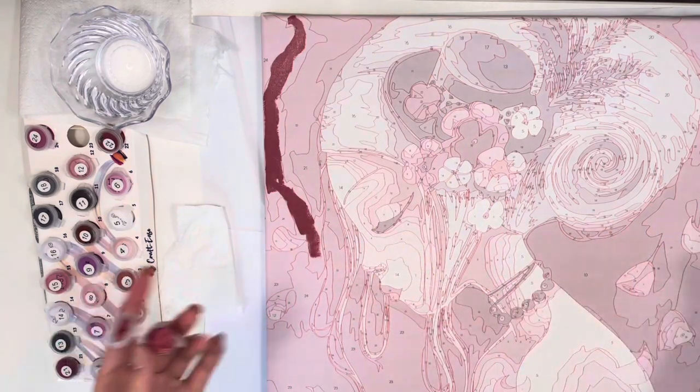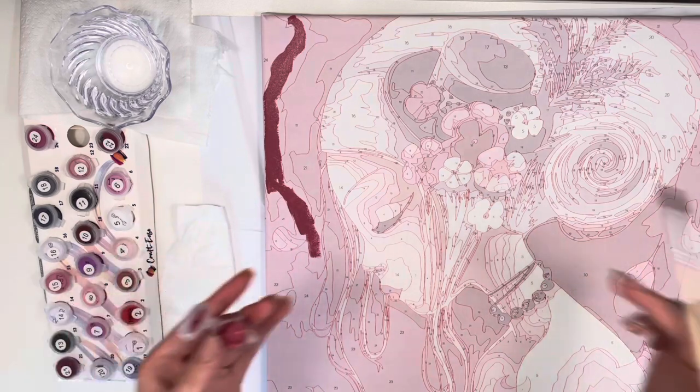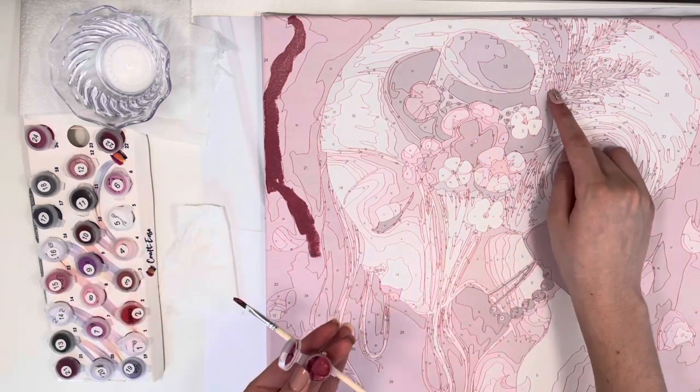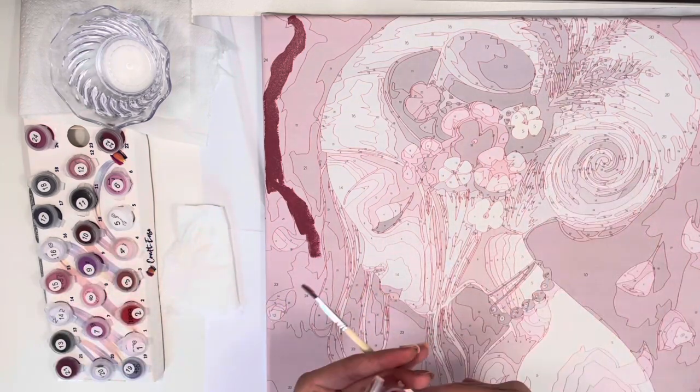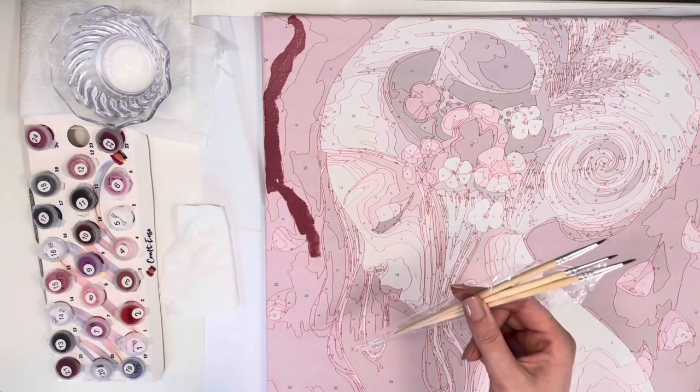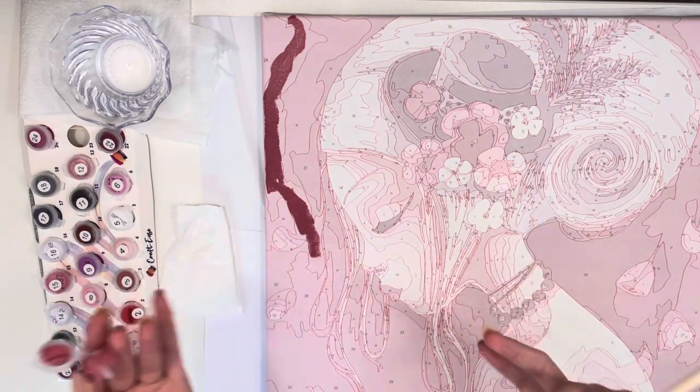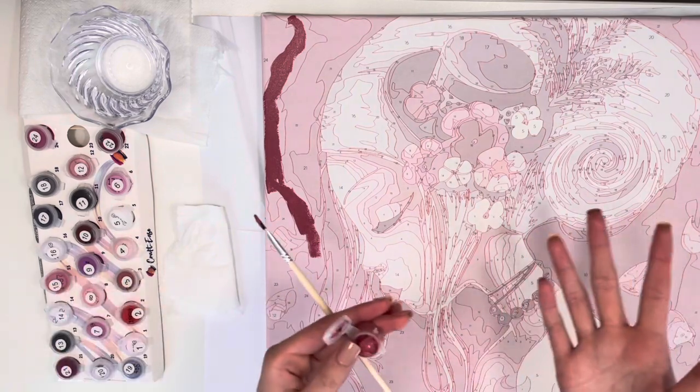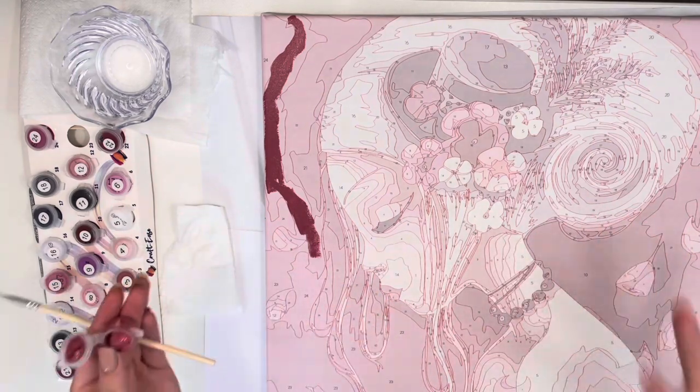So I'm going to be starting off with the larger areas and then moving on to the smaller areas. As you guys can see right here, they're super tiny, so that's why I'm going to be using these tiny brushes that were provided. I'm just going to start a time lapse and continue painting. My sister Sarah will be helping me out to paint the painting.